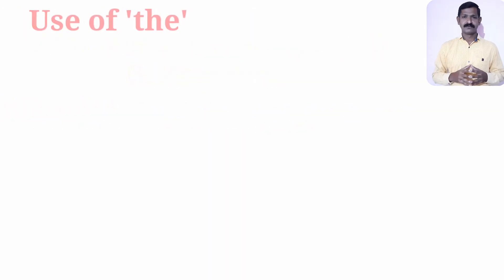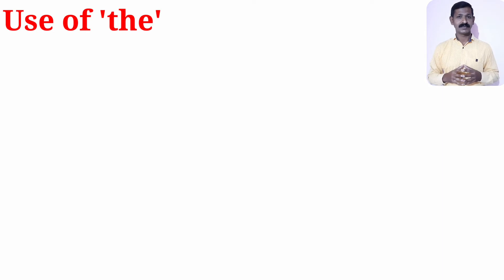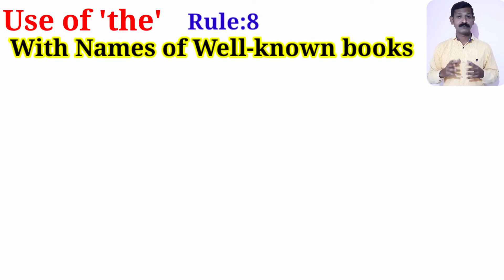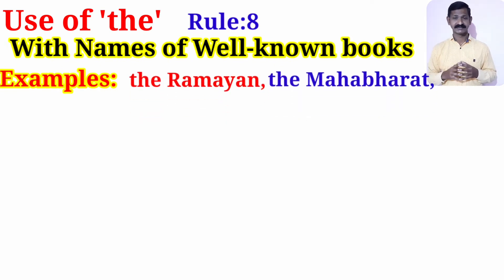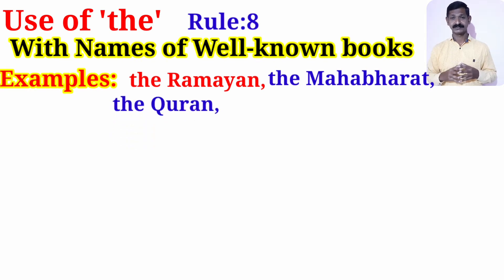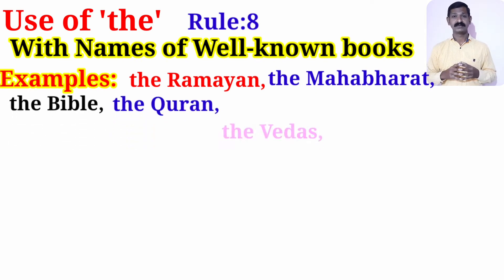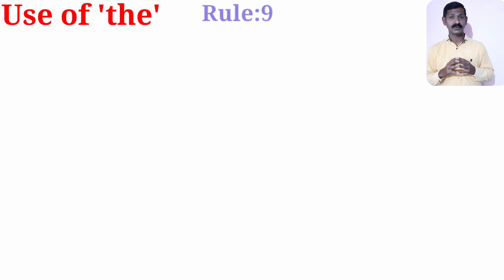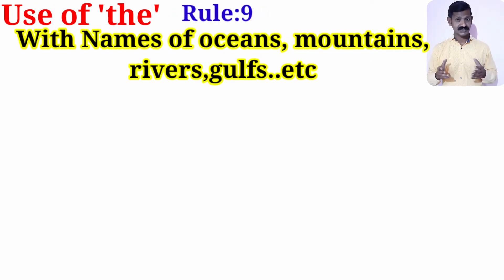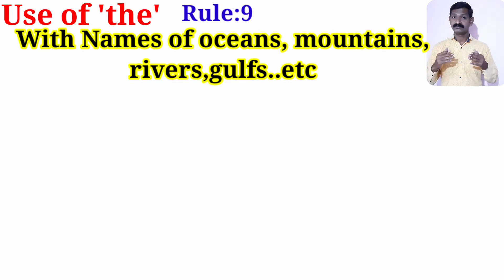We use article 'the' with the names of well-known books — for example: the Ramayana, the Mahabharata, the Quran, the Bible, the Vedas, the Upanishads, and so on.